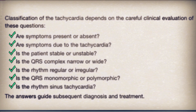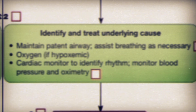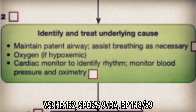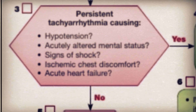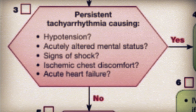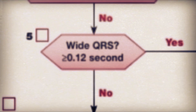All questions are answered and we can use this information for diagnosis and treatment. Continuing to the adult tachycardia with a pulse algorithm: bubble 2 asks if we have a patent airway — we do — and his SpO2 didn't indicate trouble. It then asks us to identify the cardiac rhythm, which we have as a-fib. Advancing to bubble 3, the patient does not have hypotension, altered mental status, shock, chest discomfort, or heart failure.